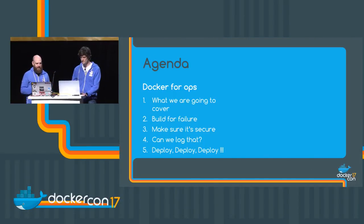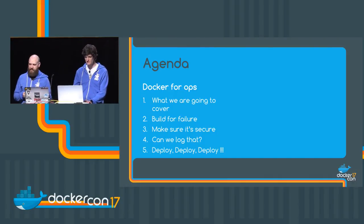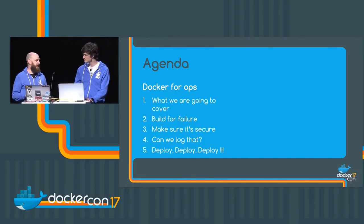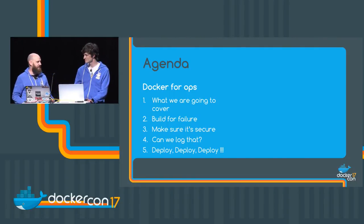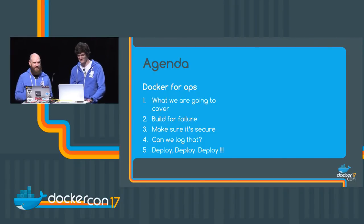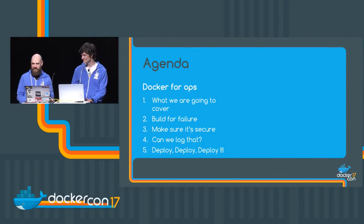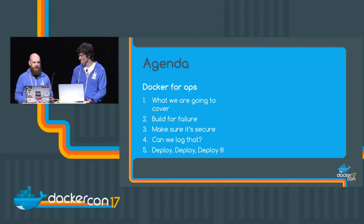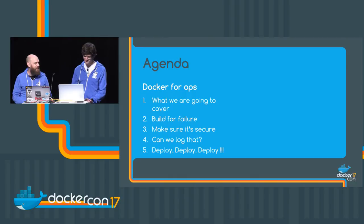We're going to look at building for failure, because we don't want our application to go down. If our application is down, we're not making money. But if you're a business, it's kind of the same - you don't want your application to go down either. We want to make sure it's secure. We don't want anyone from the Inditech security team to come in and hack us and take our money. So we're going to look at protecting ourselves from that.